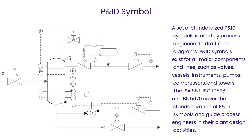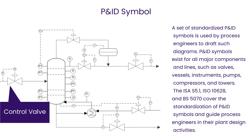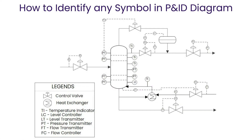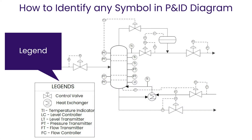Let's see some PID symbols. This is the PT, this is control valve, and this is a heat exchanger PID symbol. We can identify symbols from the legend given in any kind of PID diagram. In the legend, all symbols of the related PID diagram are given, so we can easily identify PID symbols.